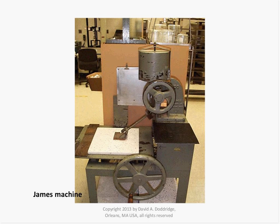Types of tribometers include the James machine, which is older and not portable; a drag sled, which is something you pull that slides along the surface of the floor — that is a portable device; a pendulum; and a robotic device such as the BOT3000, which measures the coefficient of friction wet or dry, static or dynamic. The testing equipment must meet the requirements of the standard being used.